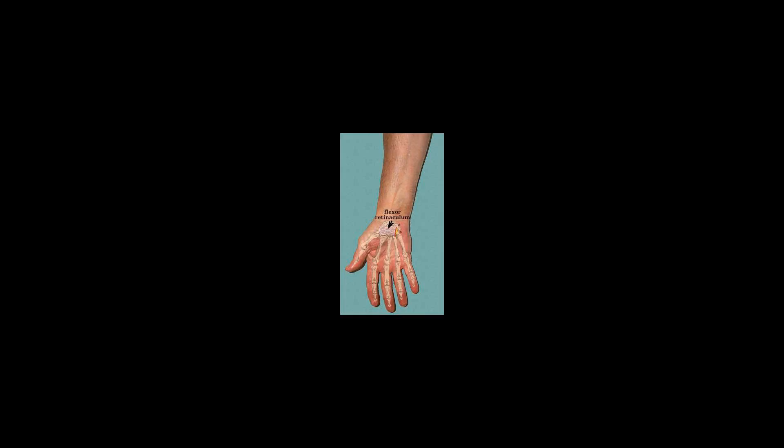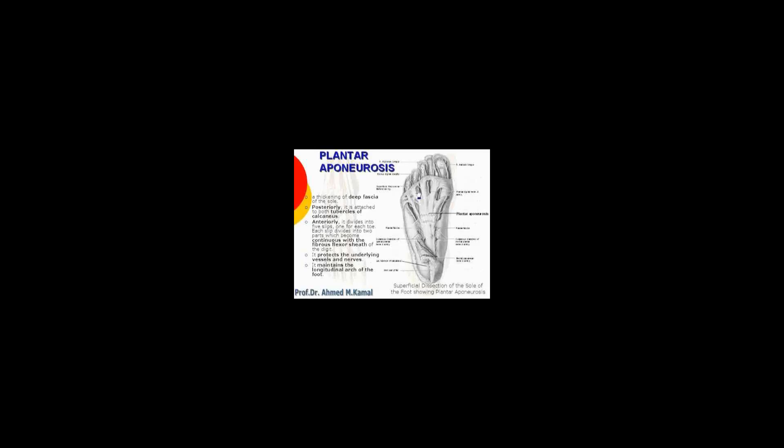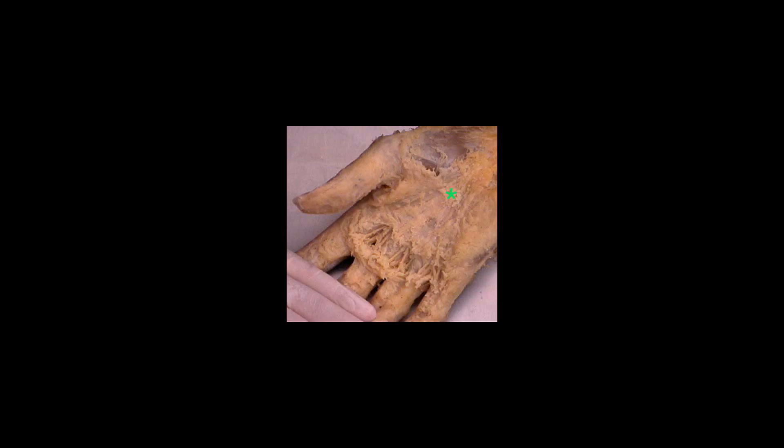Scalp aponeurosis. The aponeurosis, or galea aponeurotica, is a tough layer of dense fibrous tissue which runs from the frontalis muscle anteriorly to the occipitalis posteriorly.